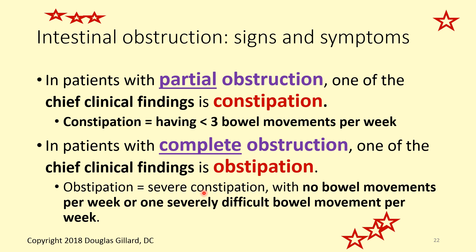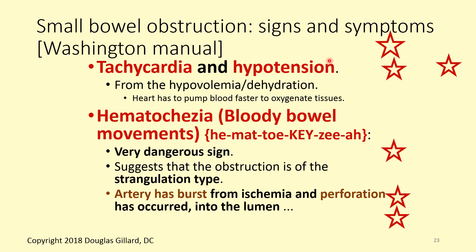Official definitions: partial obstruction typically causes constipation — less than three bowel movements per week. A patient with complete bowel obstruction will have obstipation — no bowel movements per week, or maybe one that is severely difficult to pass. With progression come serious findings: low blood pressure from hypovolemia, and tachycardia. With low blood pressure the tissue can't get oxygen, so the heart speeds up to compensate — that's what the tachycardia means.